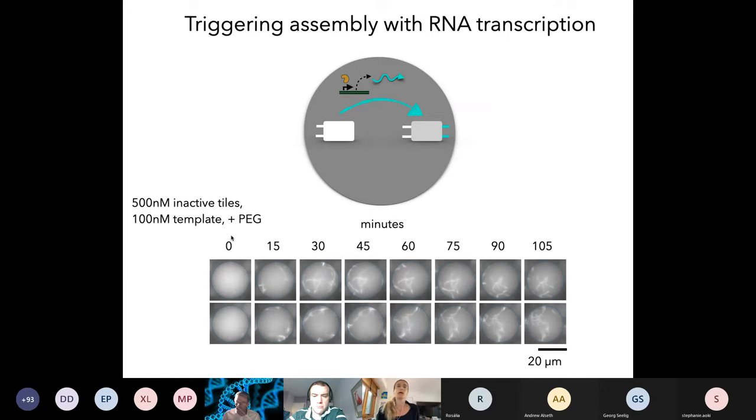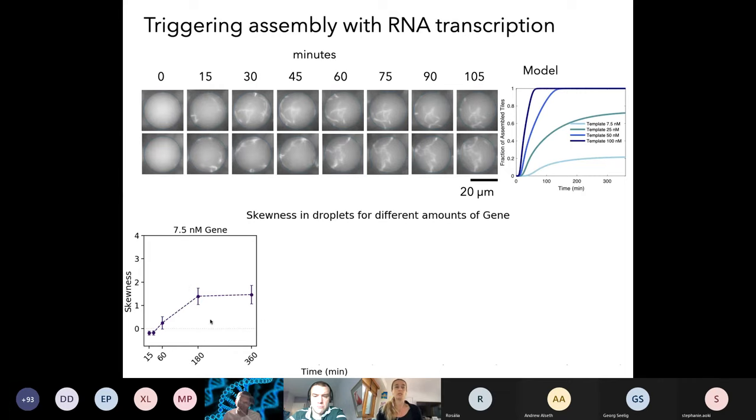What we observed at a given inactive tile amount and given amount of template plus PEG. We needed PEG to actually promote, we were not sure yet whether PEG helped with the transcription speed or simply by pushing the nanotubes to the surface and making it easier to observe them. However, we found that PEG is necessary to get this reaction to work in droplets. Here are example images. If you vary the amount of template, you get assembly happening with a different speed. If you have a low amount of template, you need about three hours to get to steady state. But if you have a higher amount of gene, you need about an hour to get close to steady state.